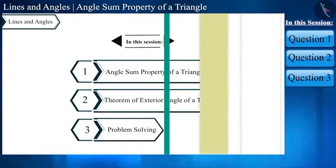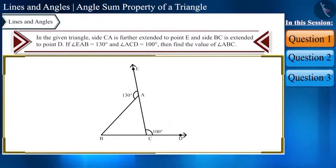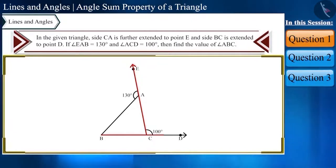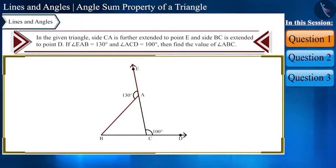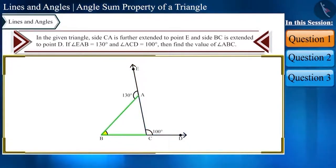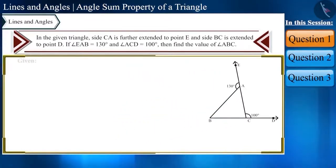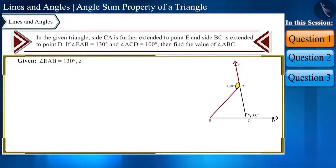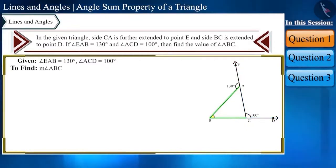Let's start with the first question. In the given triangle, side CA is further extended to point E, and side BC is extended to point D. If angle EAB equals 130 degrees and angle ACD equals 100 degrees, then find the value of angle ABC. Let us first look at the angles for which the values are given: angle EAB equals 130 degrees and angle ACD equals 100 degrees.